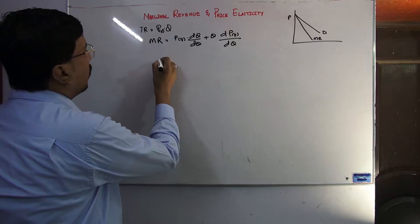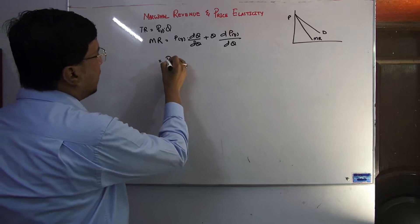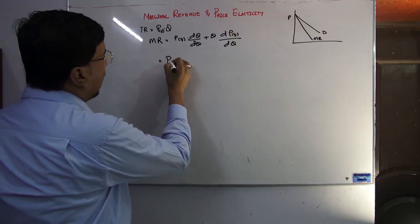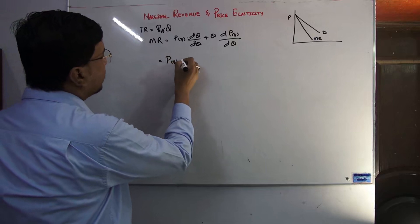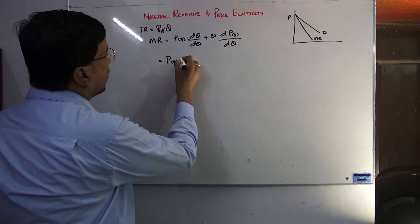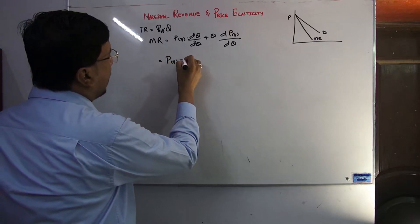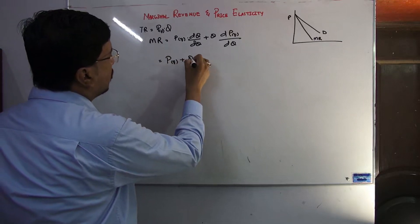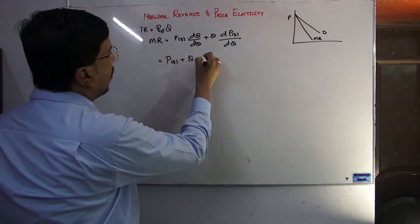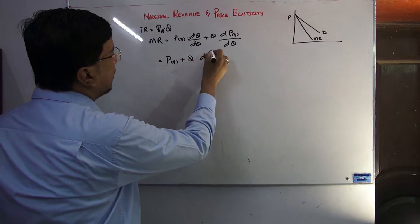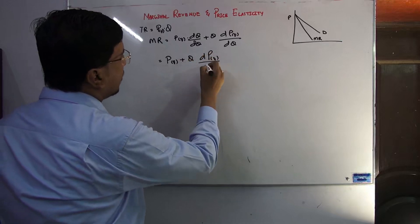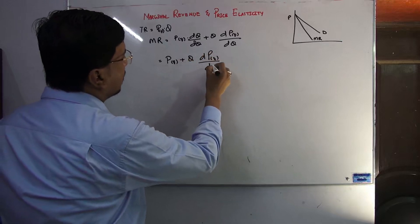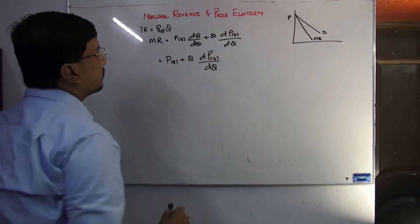Applying the product rule: P is kept as is, plus Q multiplied by dP/dQ. So the derivative of total revenue with respect to Q gives us P plus Q·(dP/dQ).